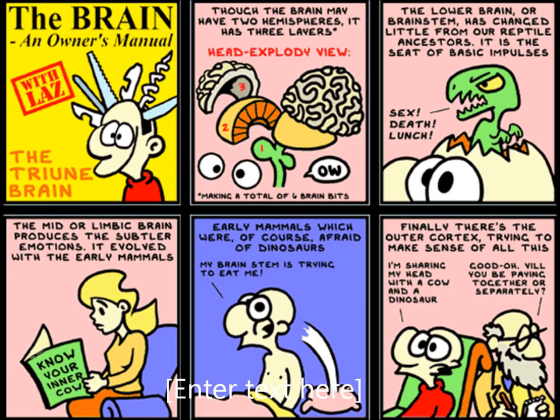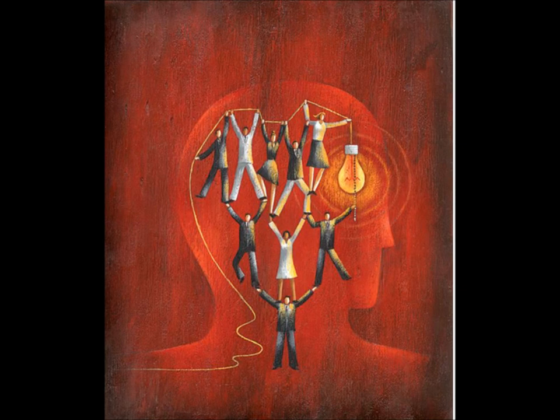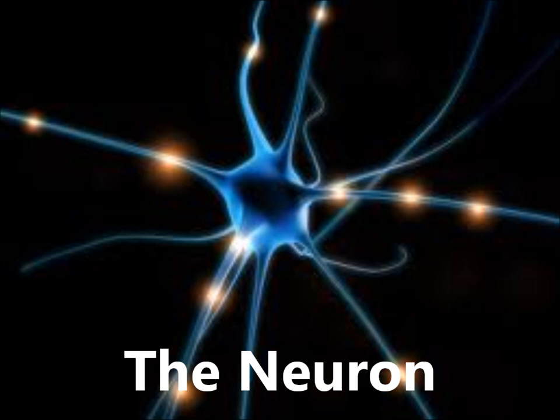Welcome to the Psych2Go Review for Don and Sandra Hockenberry's Psychology, Chapter 2: Neuroscience and Behavior. The chapter has five sections. Section one is called Introduction to Neuroscience and Behavior. The second section is called The Neuron, the Basic Unit of Communication.